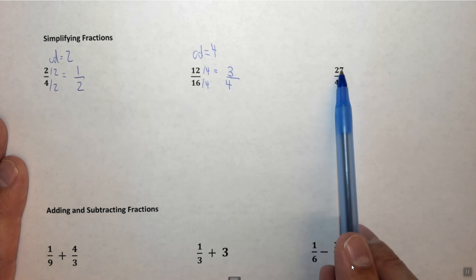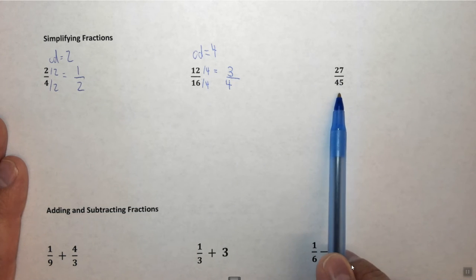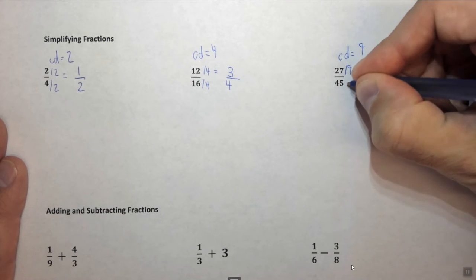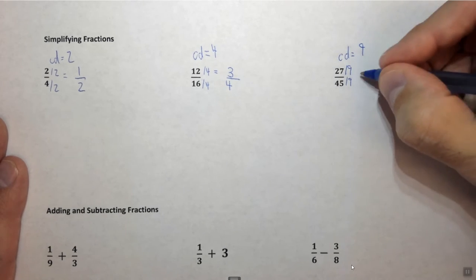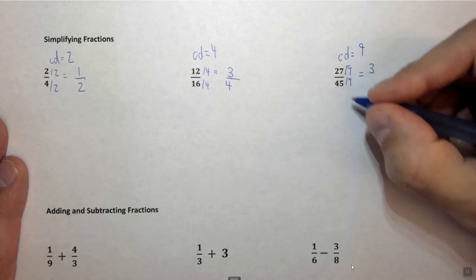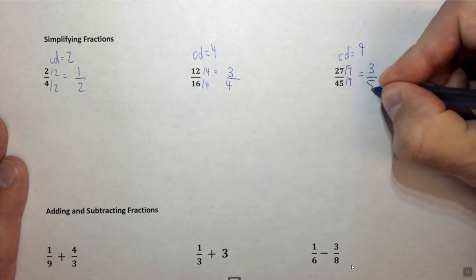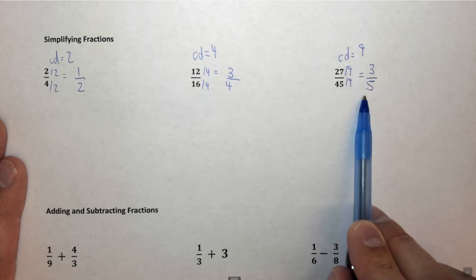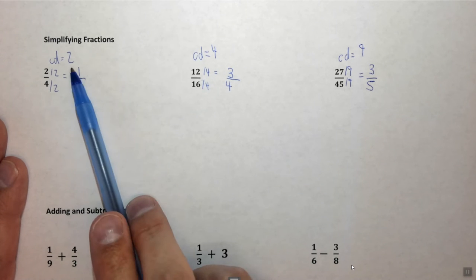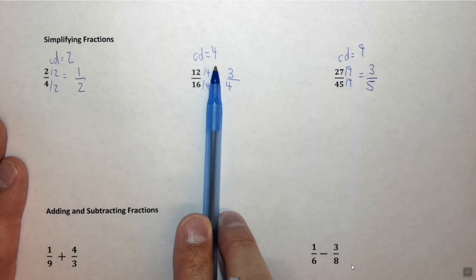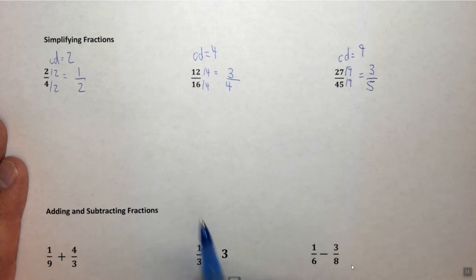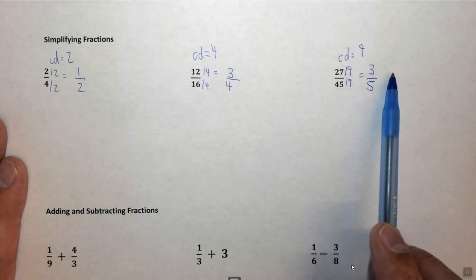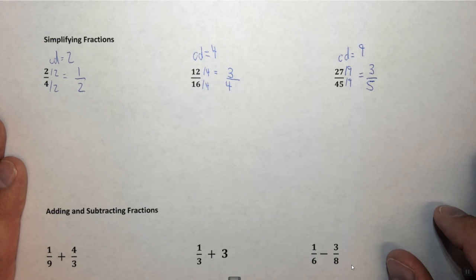Now let's look at another example. We have 27 over 45. In this case the common denominator is 9. Both are evenly divisible by 9. 27 divided by 9 is 3. 45 divided by 9 is 5. So 27 over 45 can be simplified to 3 fifths. So when simplifying fractions you're looking for the common denominator, or the lowest common denominator as it's sometimes called, and we have simplified out.